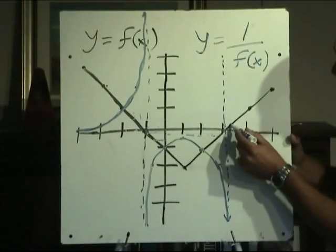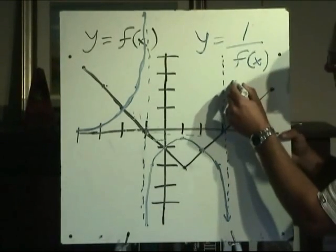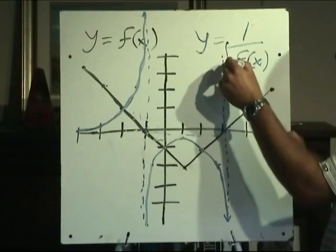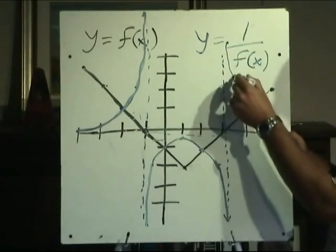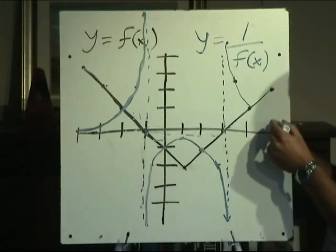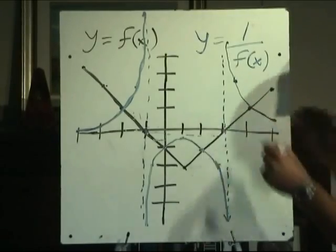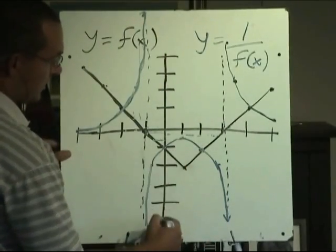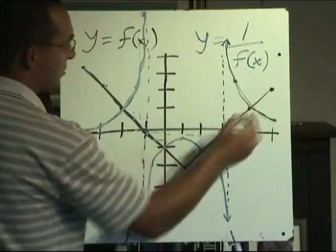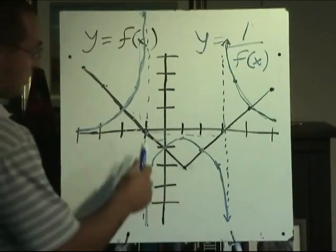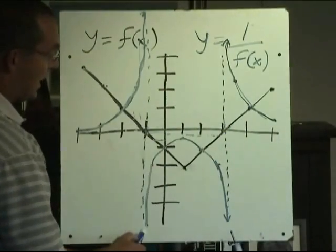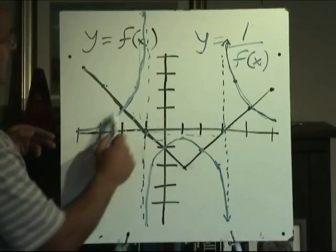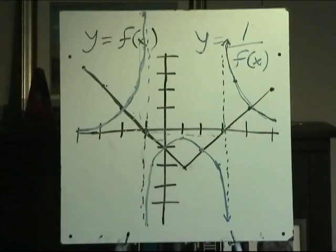Moving over here, a y value of one half — one half flipped around would be at 2. There would be a y value of about one fifth, which flipped around would be way up at 5. A y value of 1 stays at 1, and finally a y value of 2 — the reciprocal of that is one half. So our graph curves up here, has a curve down here, and a curve going up here. When starting out, it's not a bad idea to first mark all the x-intercepts with dashed vertical asymptotes, then take your y values, flip them around, and replot them.